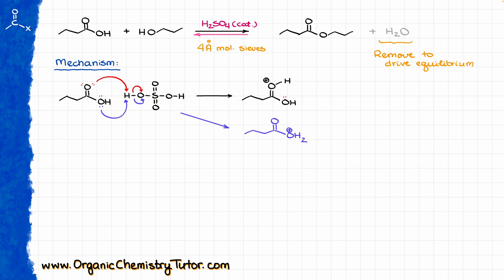The main reason we protonate at the carbonyl rather than the OH group is that forming this protonated intermediate gives us a resonance-stabilized intermediate. The bottom option — protonating the OH — has absolutely no resonance, and you end up with an oxygen with a positive charge sitting right next to a carbon that already has a significant delta-plus charge due to carbonyl polarization, making it thermodynamically unstable. So whenever you protonate a carboxylic acid or derivative, always do so at the carbonyl position and not at the OH.